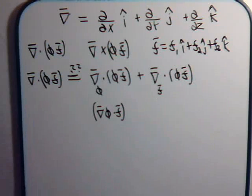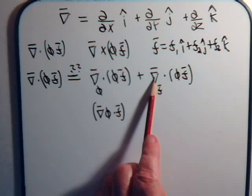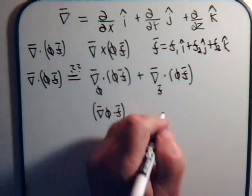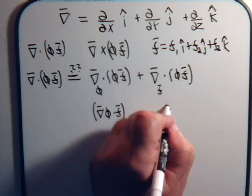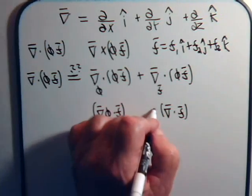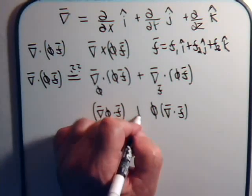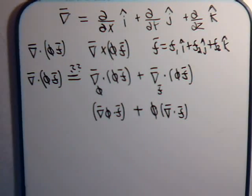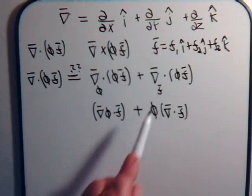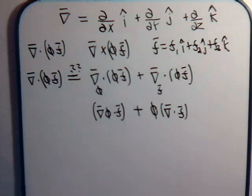And here, now del operates only on the vector f. So, in this situation, we would have del dot f and it's just going to be multiplied by phi. So, this gives us this expression. This gives us this expression.